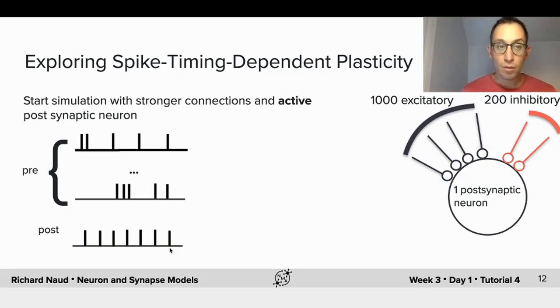If instead, we start the simulation with stronger connections, such that the post-synaptic neuron is active, then we're typically in a case where there's quite a lot of current flowing through, and the post-synaptic neuron is in this mean-driven regime and fires quite regular action potentials. And it's not locked to any particular firings in the presynaptic cells.